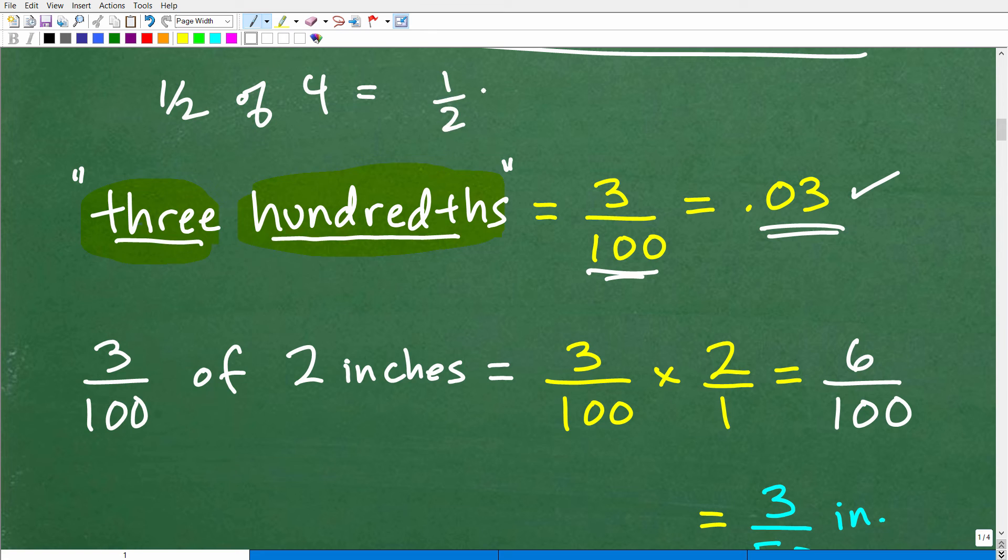If I told you find 1 half of 4, and I take 1 half and I multiply it by 4, or 4 over 1, I would get what? 4 over 2. Of course, you have to know how to multiply fractions, and 4 divided by 2 is 2. So 1 half of 4 is 2. That's correct. So just multiply that fraction by the whole that you're trying to work with. In this case, it's 2 inches.